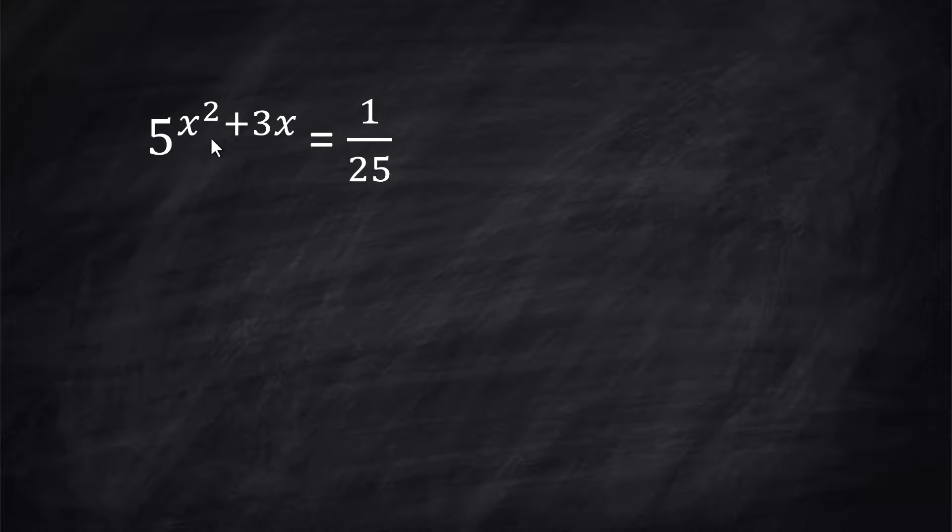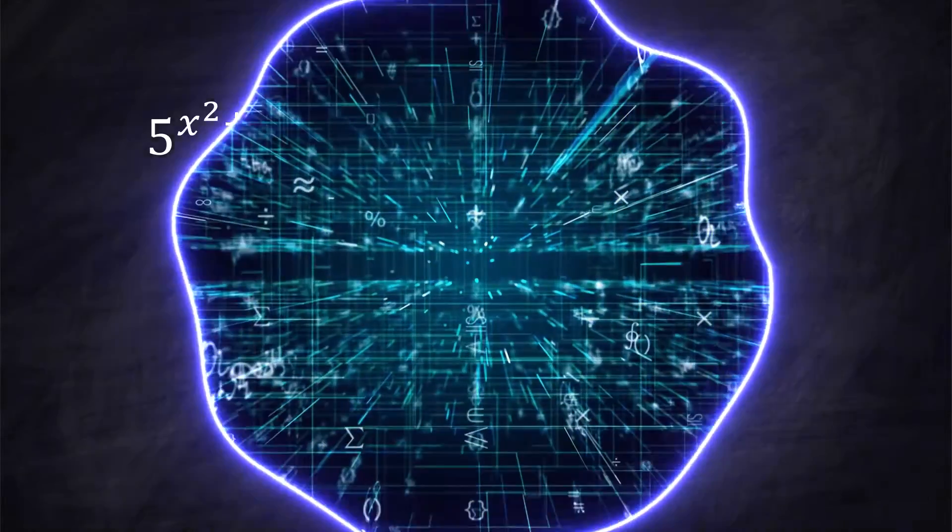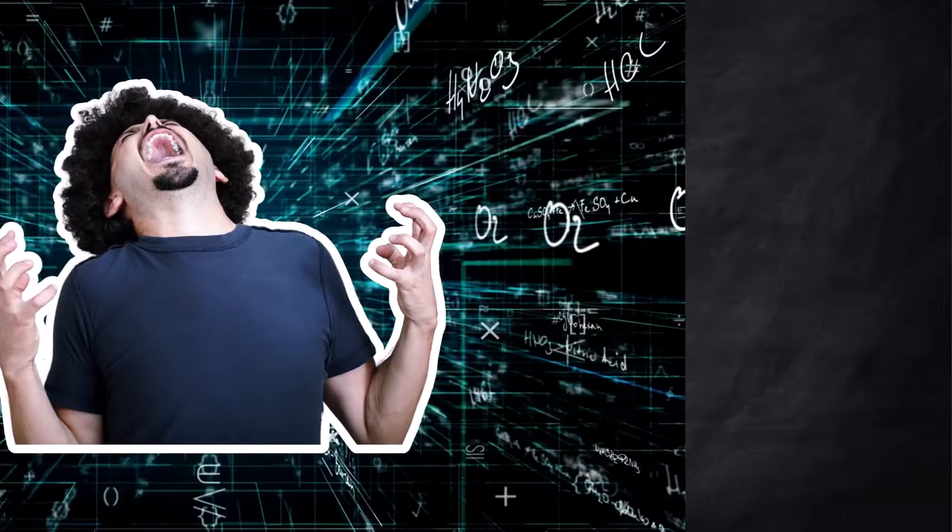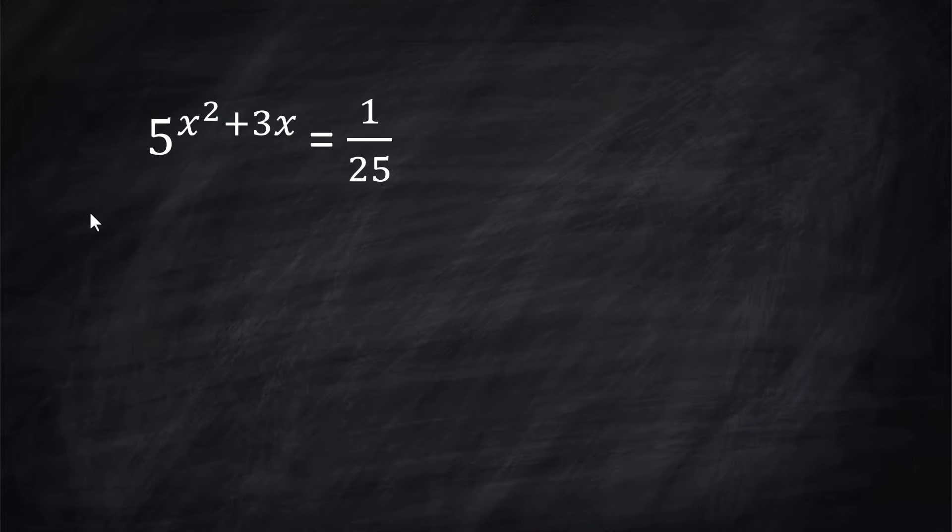This is a special little problem. Your exponent has an exponent, that's like inception level. And there's a fraction. Pretty much everything that freaks people out about math is wrapped up right here in this one problem. Even if you're not sure, you have attack strategies. You've got to remember that very first question: is the same base possible?